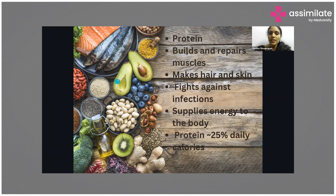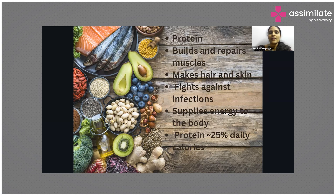Sources of protein include lean cuts of meat, fish, nuts, and seeds. Coming to vegetable sources of protein: legumes and pulses have a good amount of protein along with carbohydrates. Legumes include all beans — chana, rajma, chole. Pulses include all dals — toor dal, urad dal, moong dal. Soya is a very good plant-based protein. Fish, chicken, and lean cuts of mutton are very rich in protein. Nuts and seeds like pista, almonds, walnuts, and cashews also contain a small amount of protein.